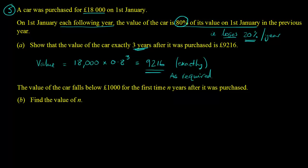Now, for part B, we require something a little bit more tricky. We're told that the value of the car falls below £1,000 for the first time n years after it's purchased. Now, the way I tend to approach these is to translate this into mathematics. If I write the sentence, the value after n years is less than £1,000.